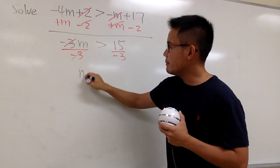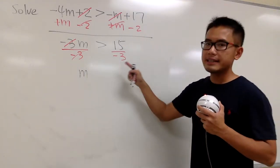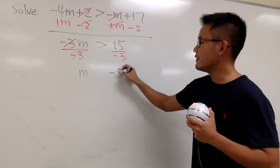Finally, we see the m on the left-hand side by itself. Work this out, 15 over negative 3, we end up with negative 5.